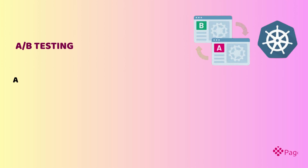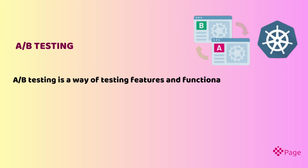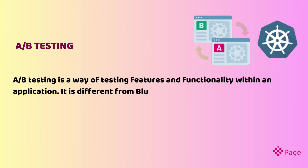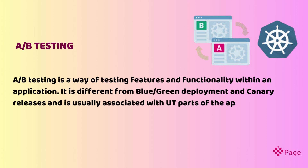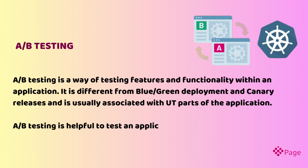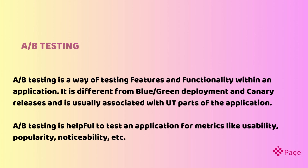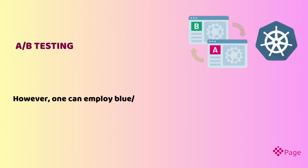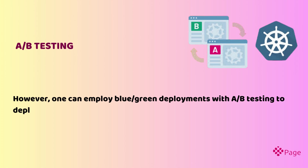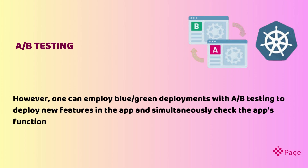A/B testing: A/B testing is a way of testing features and functionality within an application. It is different from blue-green deployment and canary releases, and is usually associated with UI parts of the application. A/B testing is helpful to test an application for metrics like usability, popularity, noticeability, etc. One can employ blue-green deployments with A/B testing to deploy new features in the app and simultaneously check the app's functionality.